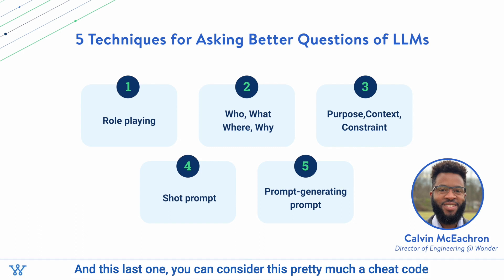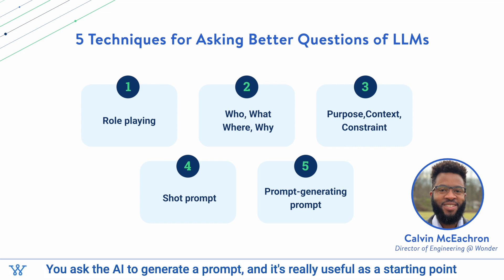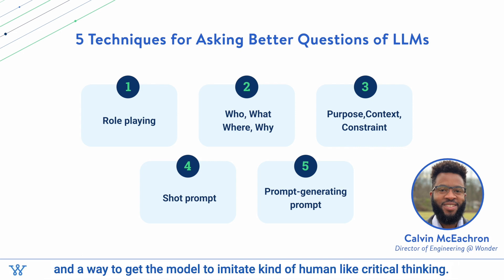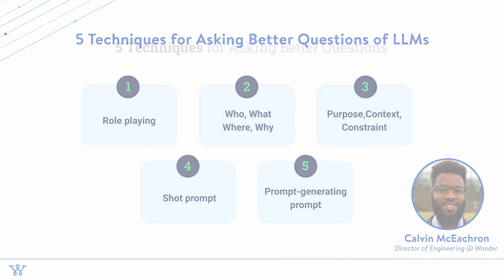This last one you can consider pretty much a cheat code for prompt engineering and getting good responses: you ask the AI to generate a prompt. It's really useful as a starting point and a way to get the model to imitate human-like critical thinking.